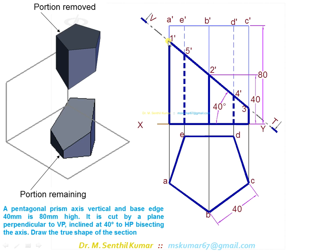The section plane cuts all 5 vertical edges of the pentagonal prism: edges 1, 2, 3, 4, and 5 — giving 5 cutting points. Mark those cutting points: 1-dash on A-dash, 2-dash on B-dash, 3-dash on C-dash, 4-dash on D-dash, 5-dash on E-dash. After cutting, transfer the cutting points onto the top view. That is the apparent section. The cutting plane is inclined to HP, so the corresponding sectional top view is called the apparent section — it is not the true shape.